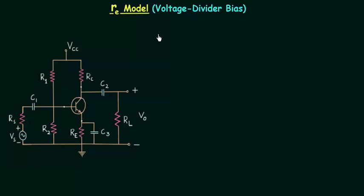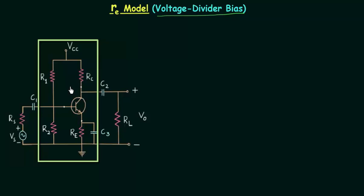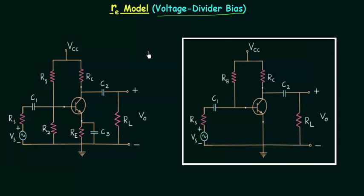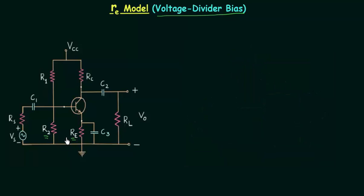In the previous 3-4 lectures we discussed BJT amplifier circuit with fixed bias configuration. In this lecture, instead of using fixed bias configuration we will use voltage divider bias. You can see the BJT amplifier circuit on your screen; the circuit inside the rectangle is the voltage divider bias. Comparing it with fixed bias, we have two extra resistances: R2 and RE. Because we have the emitter resistance RE, we need capacitor C3, which is the bypass capacitor used to increase the gain by short-circuiting RE.